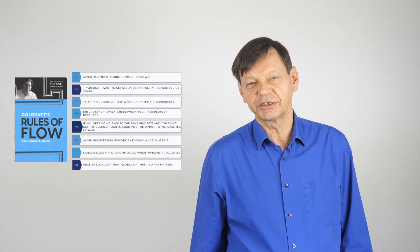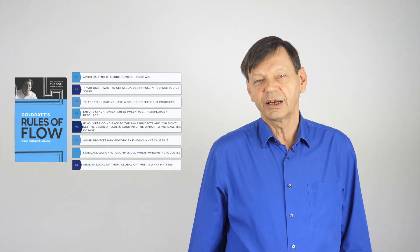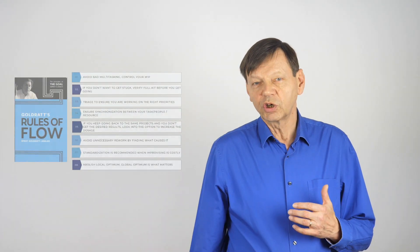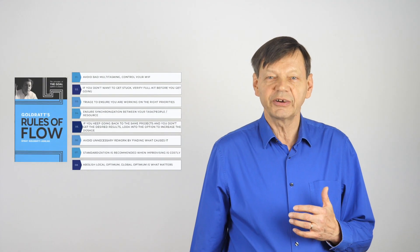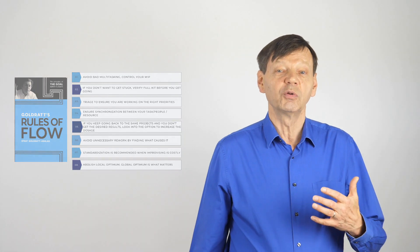Hello. This video is the first in a series of four videos on Goldratt's rules of flow in project management. In 1997, Eliyahu Goldratt published a book on the critical chain project management method, the project management component of the theory of constraints. In 2023, his daughter Efrat Goldratt Ashlag published the book Goldratt's Rules of Flow: the principles of the goal applied to projects. This work extends Eliyahu Goldratt's original concepts, refining them with 25 years of feedback from implementing the critical chain approach. This book proposes eight rules that can accelerate the flow of projects in your organization, which I will develop in this series of four videos with two rules per video.